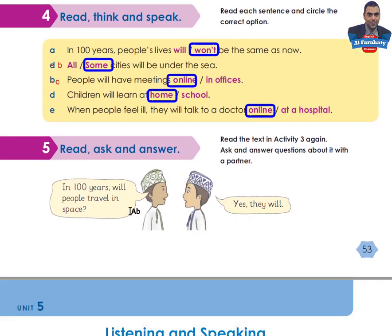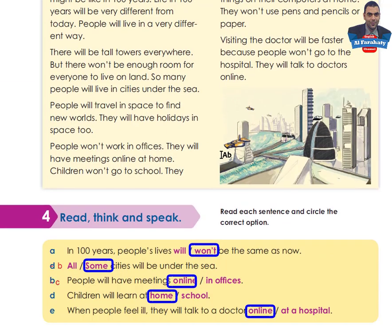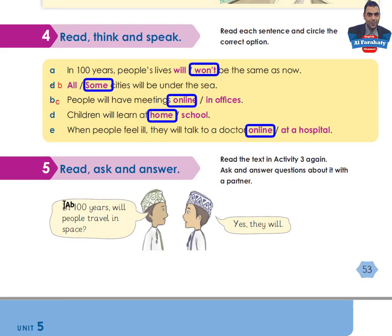Activity 5: read, ask, and answer. Read the text in activity 3 again, then ask and answer questions about it with a partner. For example: 'In 100 years, will people travel in space?' — 'Yes, they will.' Or: 'Will some cities be under the sea?' — 'Yes, they will.' / 'No, they won't.' Practice asking and answering questions about the text with your partner. By this, we have achieved the aims of this lesson. Thank you for following me. Goodbye.